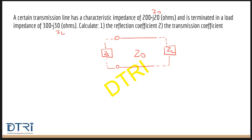First we need to find the reflection coefficient. The reflection coefficient is a unitless quantity which tells us how much of the power is reflected from the load due to the mismatch. Ideally we want Zs, Z0, and ZL all three to be matched so that there is maximum power transfer.